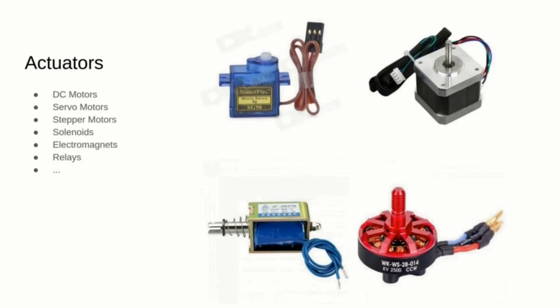If you want your microcontroller to interact with the world, you can use different types of actuators. DC motors just spin, but you can control their speed using pulse width modulation on a single digital pin and use them in drones or cars.